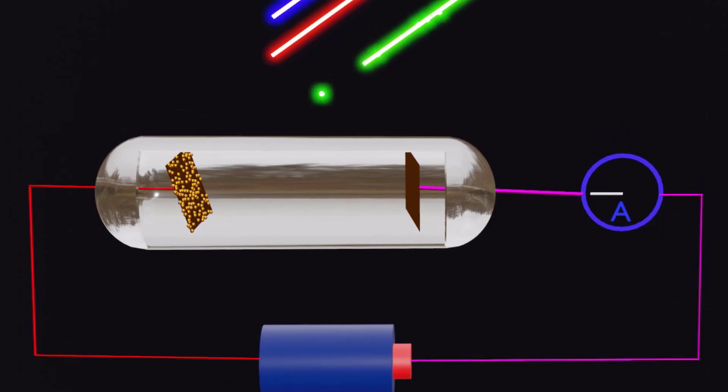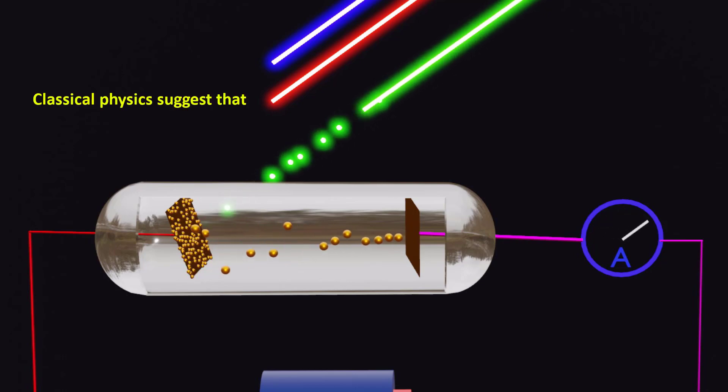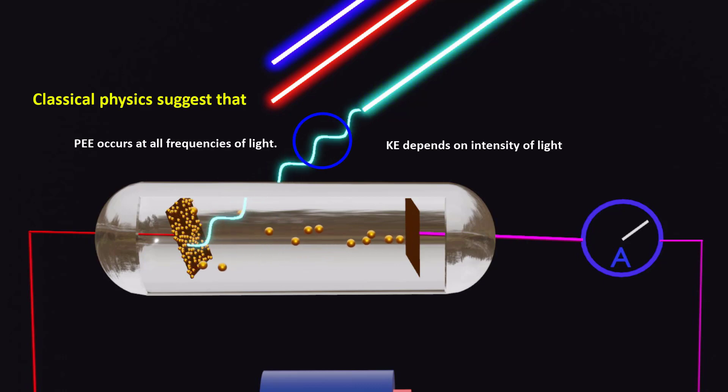The photoelectric effect provides strong experimental evidence for the particle nature of light. It contradicts classical wave theory, which suggests that the photoelectric effect occurs at all frequencies and the kinetic energy of the photoelectrons depend on the intensity of light.